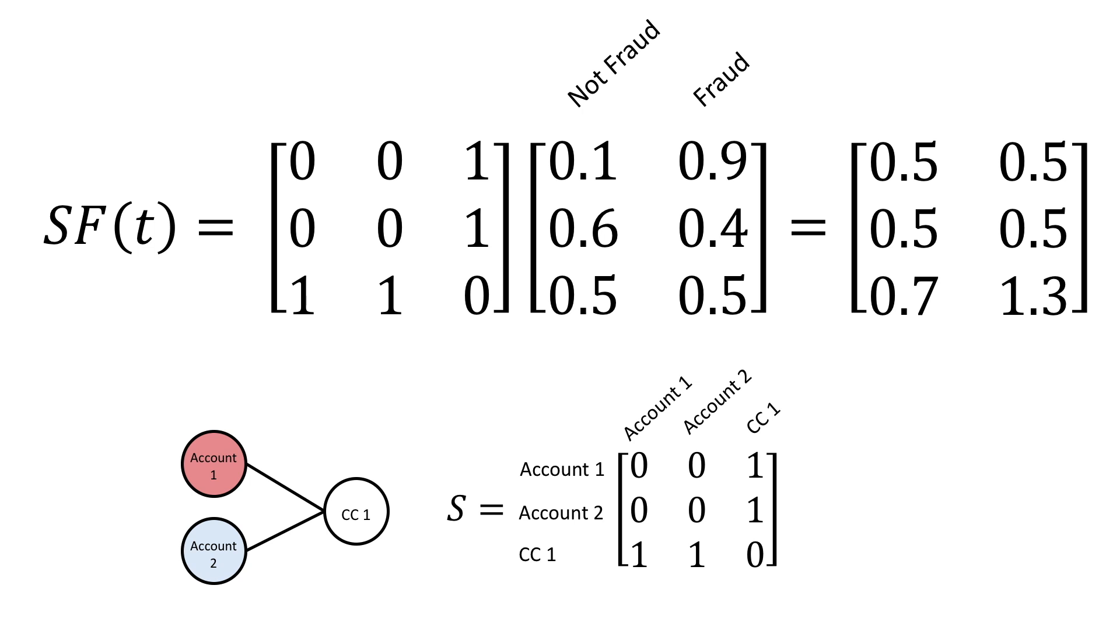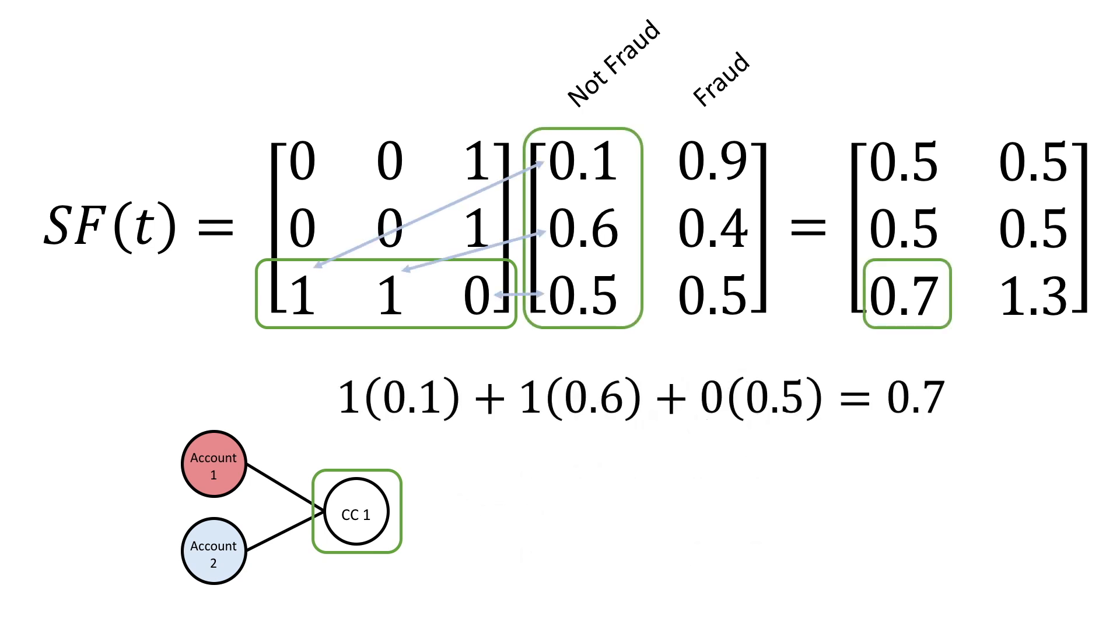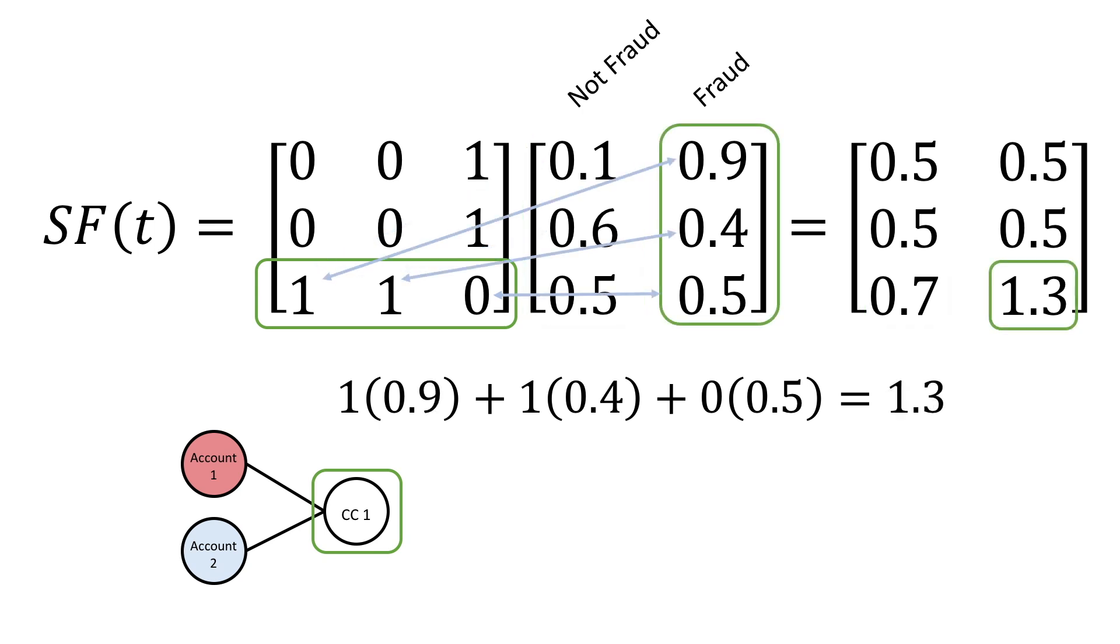As an example, let's see how the scores are updated for the CC node. The S-matrix shows that it's connected to both the accounts because there's a 1 in the first two columns. If you carry out the matrix multiplication, you'll see that to get its new legitimate score, it merely sums the legitimate scores for both accounts 1 and 2 to get 0.7. The S-matrix acts as a mask to select which elements to consider in the sum. So likewise, the new fraud scores sums the connected ones to get 1.3. In other words, it just sums the f vectors of all its connected nodes.